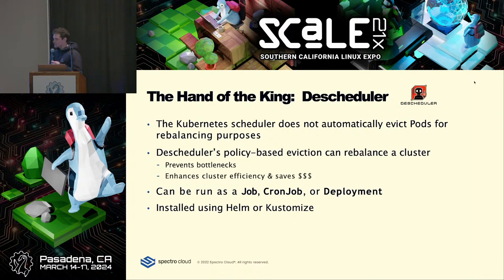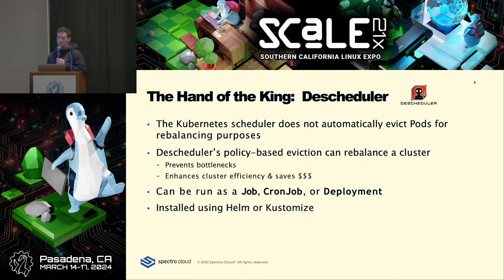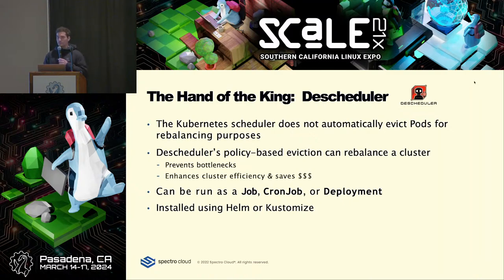The second hero of our story is Descheduler — basically DRS for Kubernetes. What a lot of people don't know is that the scheduler doesn't evict pods for rebalancing purposes; it just does one-time scheduling up front and you get what you get. If a node goes offline and all your workload ends up on one overutilized node, and then you introduce a new node, nothing automatically rebalances — you'd have to manually reallocate workload or bounce pods. Descheduler will do that for you, preventing bottlenecks, enhancing efficiency, and saving you money.